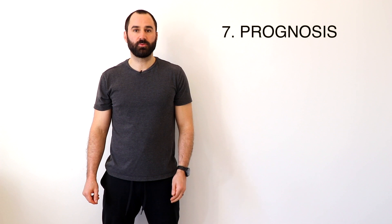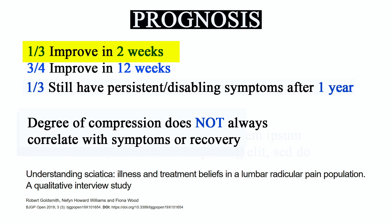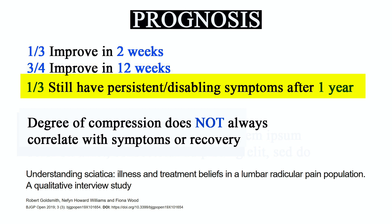So what does the prognosis of sciatica look like? It will vary a little depending on the population, but overall it appears that one-third of people will get better in two weeks, three-quarters of people will improve within 12 weeks. However, one-third of people will still have persistent and disabling symptoms after one year. The important take-away is that not all cases of sciatica are the same and there are subgroups, which makes it important that medical care is individualized to the person.